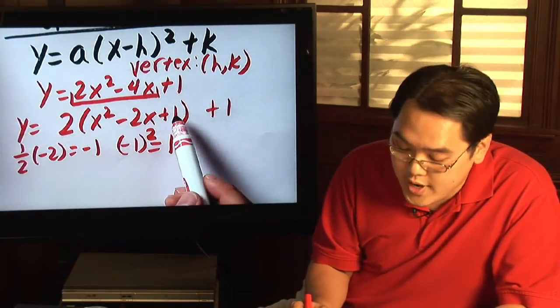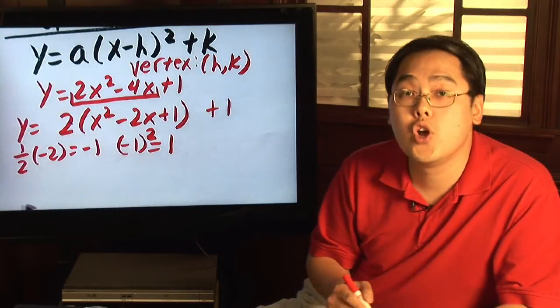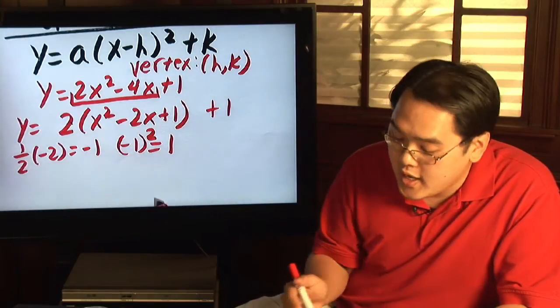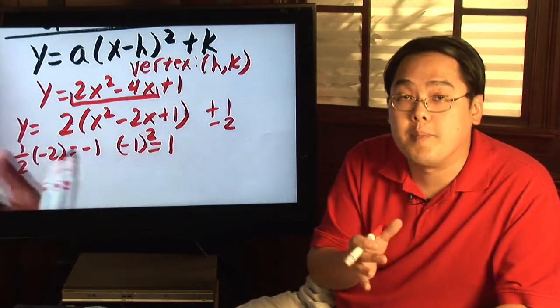But what you're actually doing is you're not actually adding the 1, you're adding 1 times 2, which is 2. But to preserve the equality, you have to subtract 2 to keep the balance going.